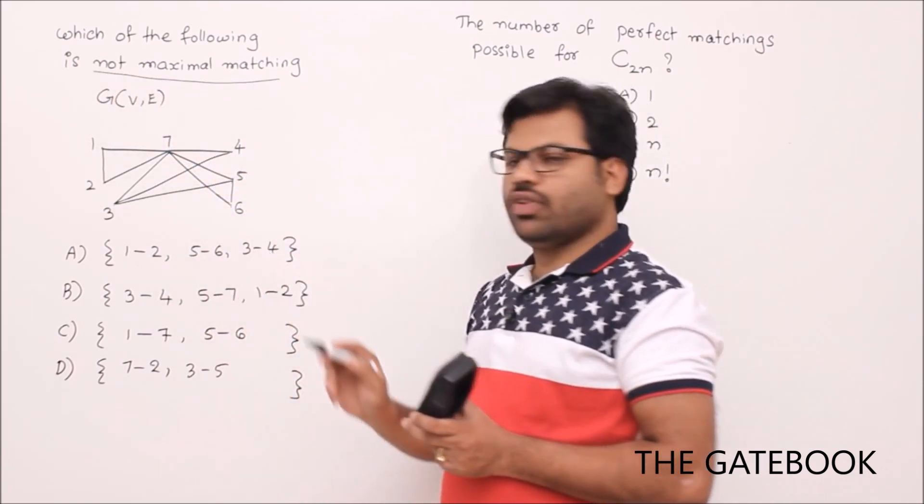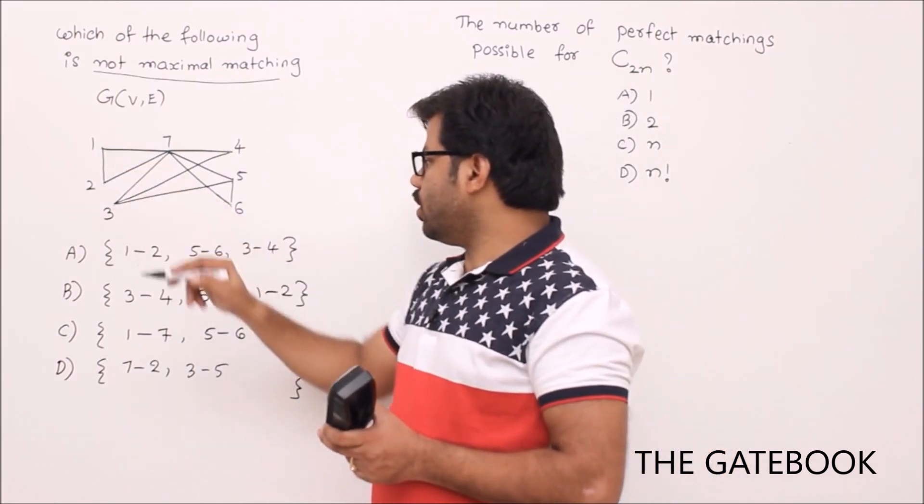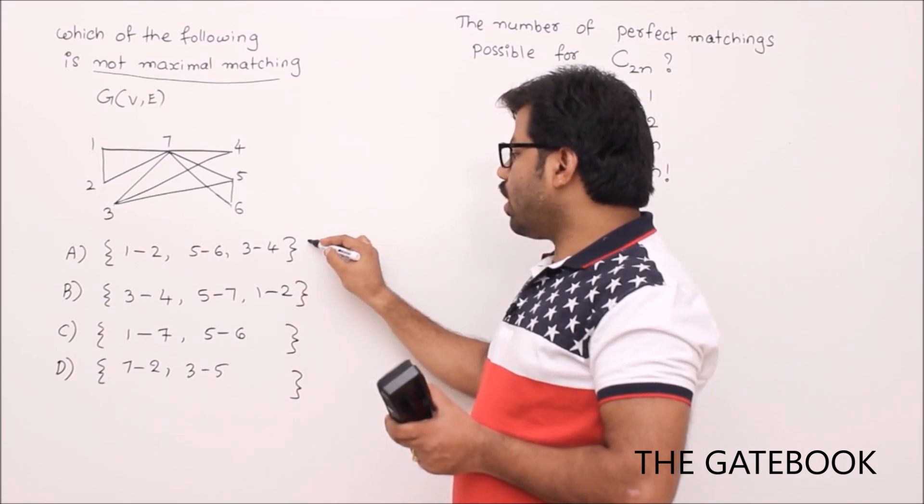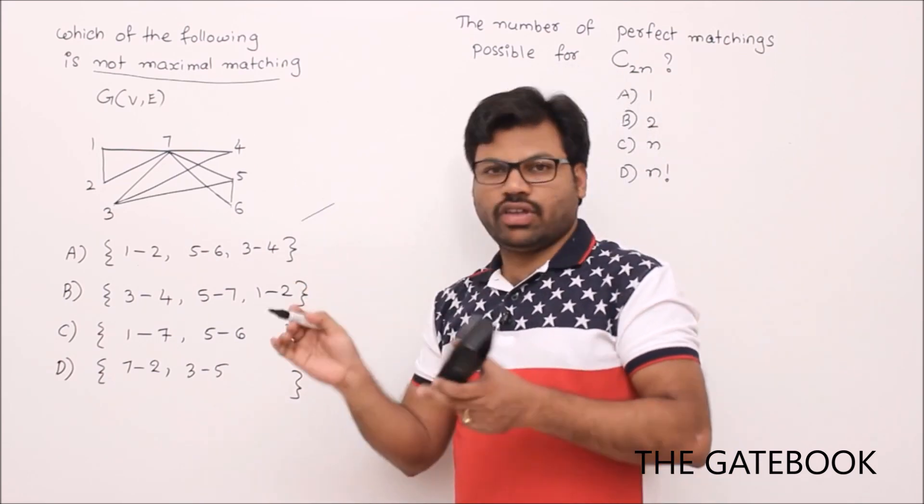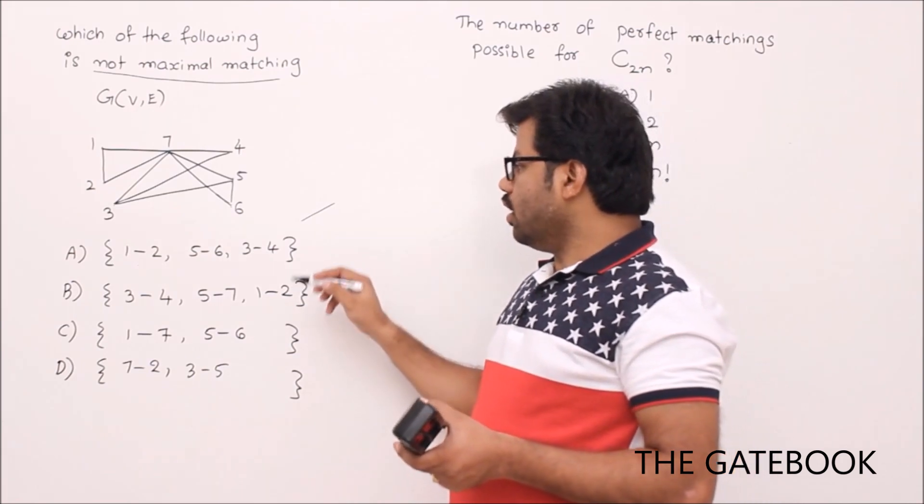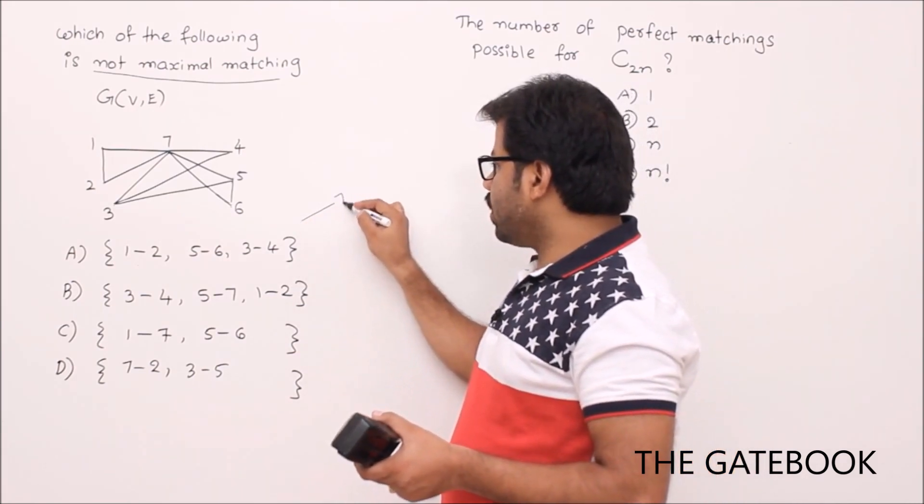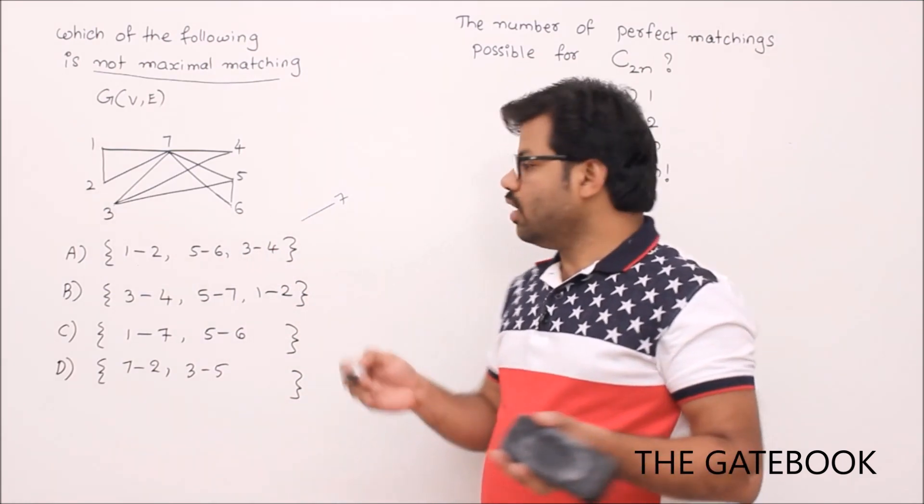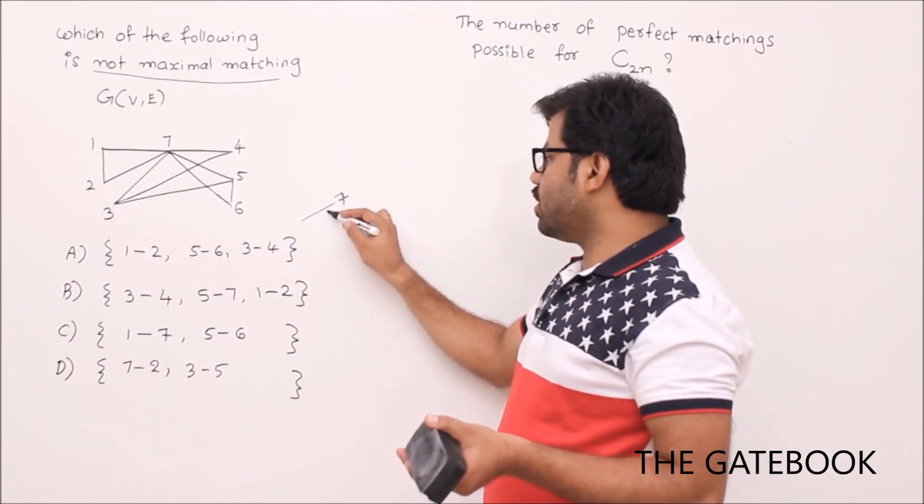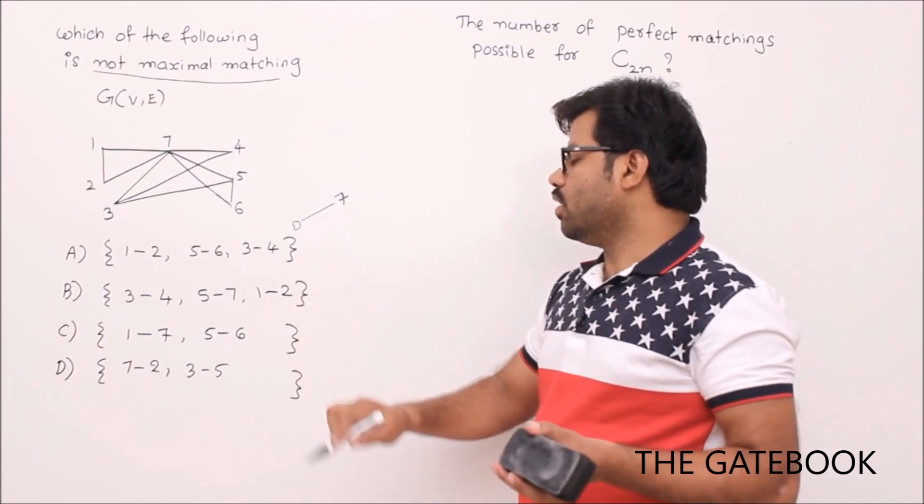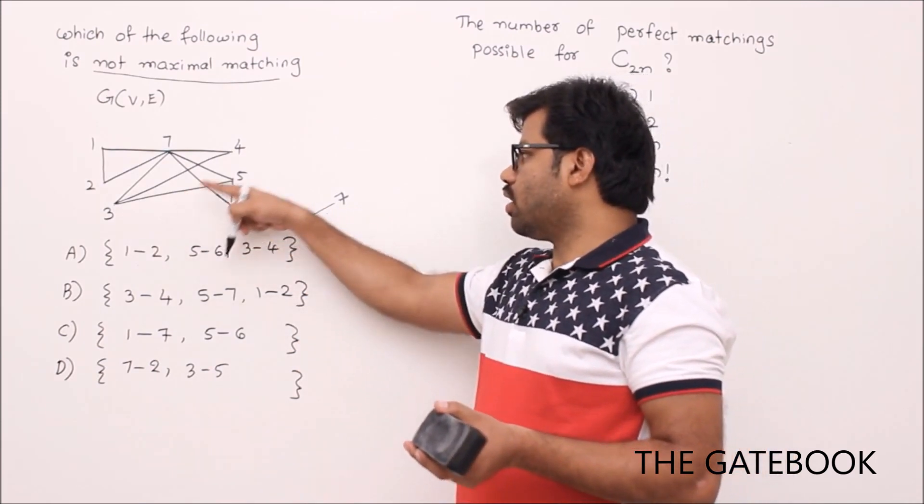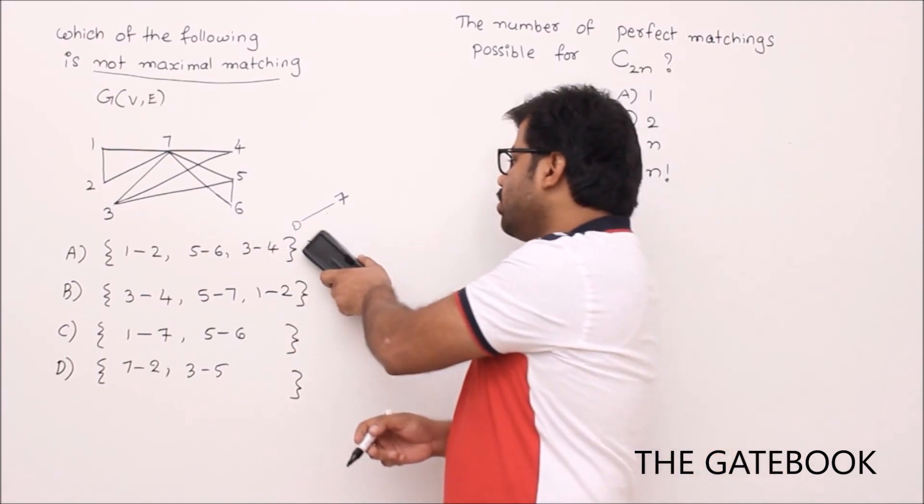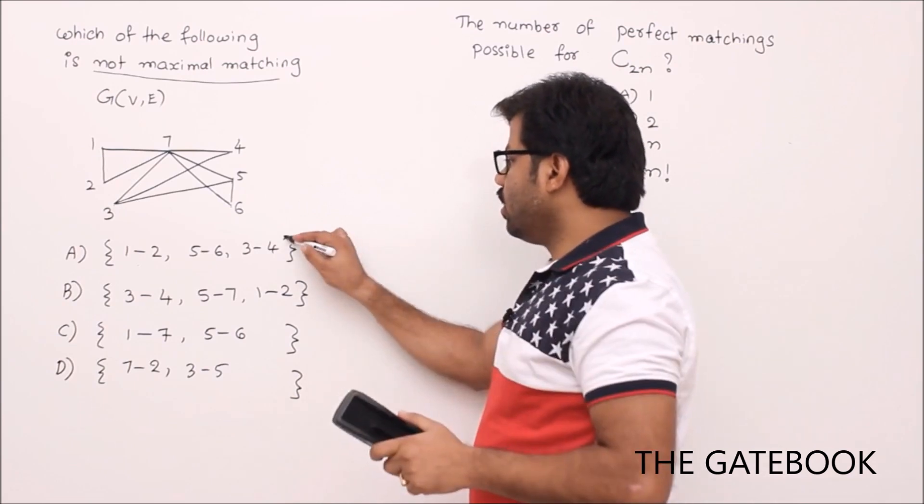1-2, 5-6, 3-4. So 1-2 is covered, 5-6 is covered, 3-4 is covered. Now you definitely can't add further edges. If I add one more edge, then one end should be like 7 because we can't repeat the vertices. If I repeat any vertex then they cannot be independent, right? So you have to take one end at 7, but what is the other end? You have to repeat either 1 or 2 or 3 or 4.